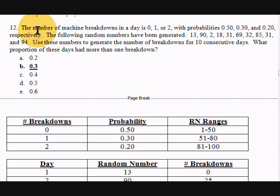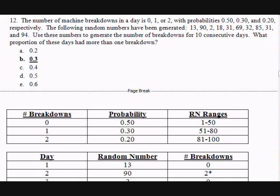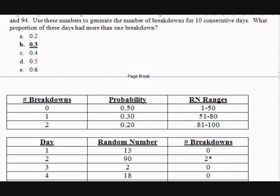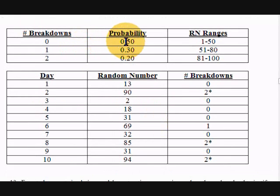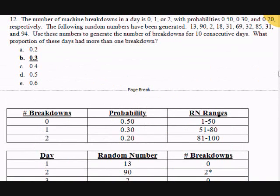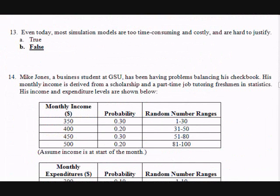And we have, in this case, a pretty straightforward breakdown problem. We have a number of breakdowns that can happen in a day, zero, one, or two, and we have various probabilities. And then we have random numbers that are generated. We have the probabilities and then the random number ranges. Remember, these stack on top of each other. After 50, it goes from 51 to 80. We did this in class a couple of times. And when we look at the random numbers, day two had two breakdowns, day eight had two breakdowns and day 10. So we had three out of 10. So that would give us our answer of 30% or 0.3, which was B.